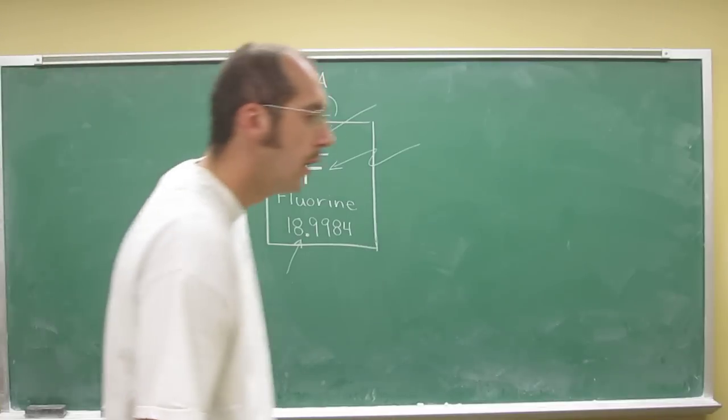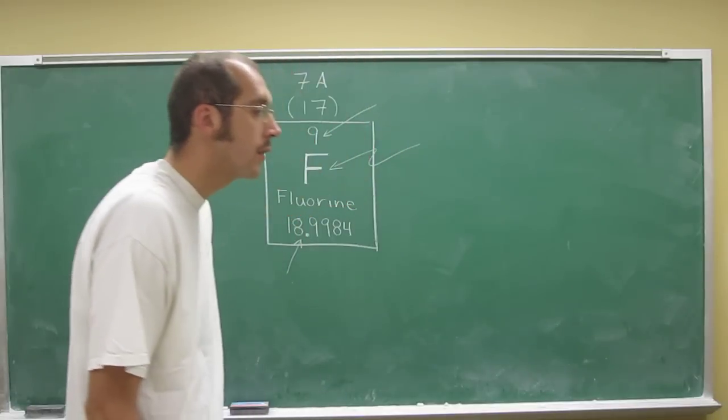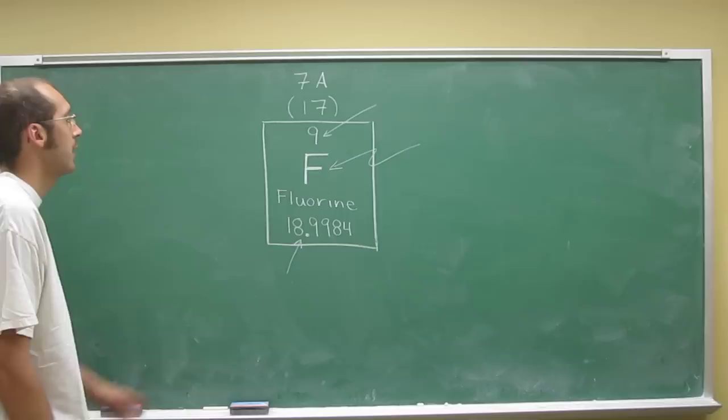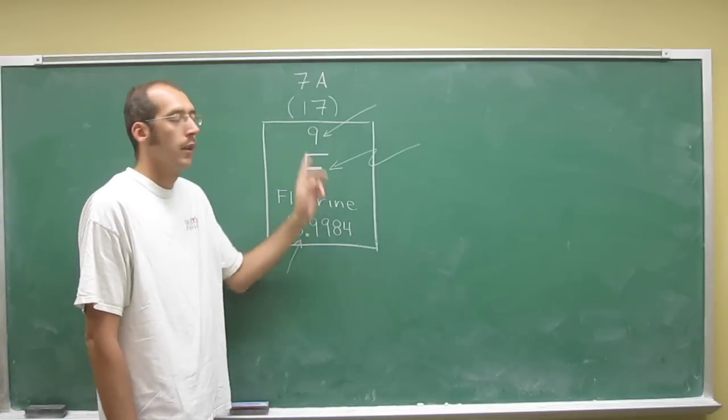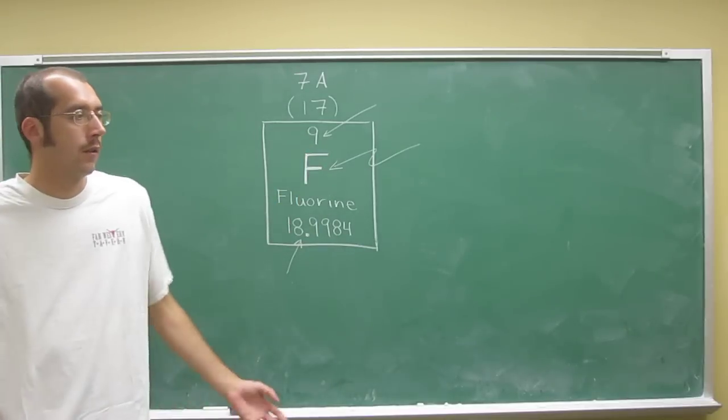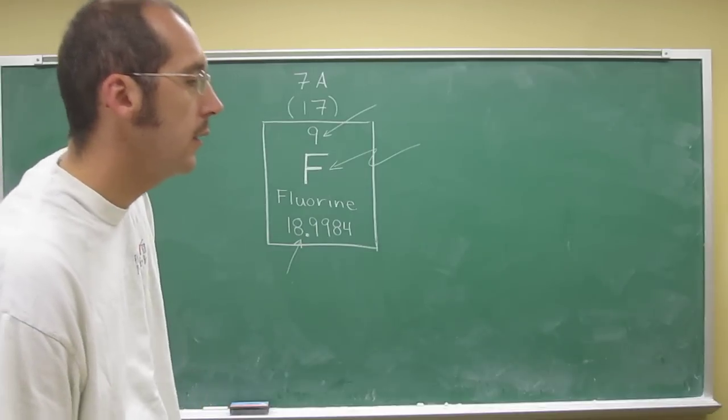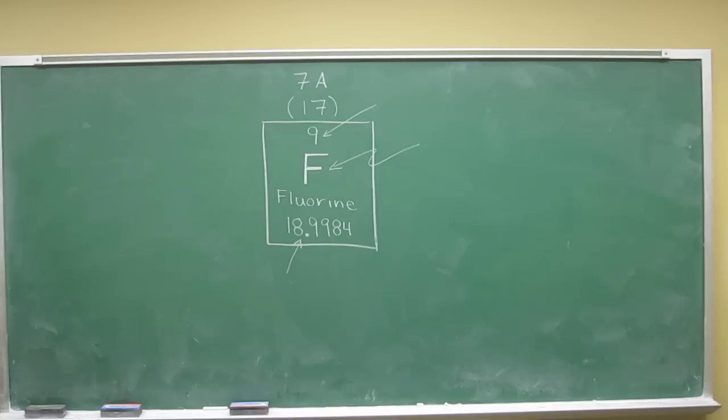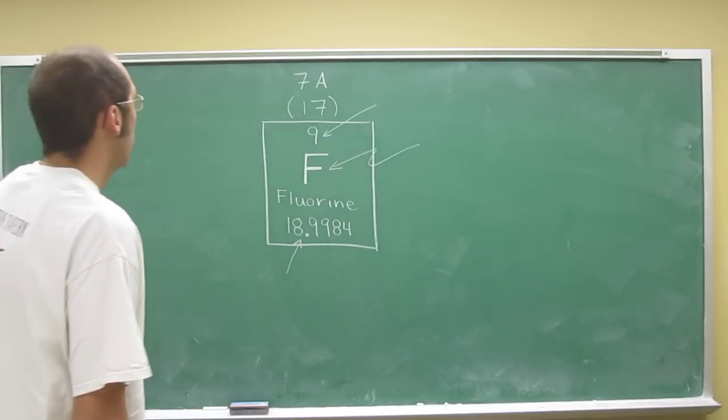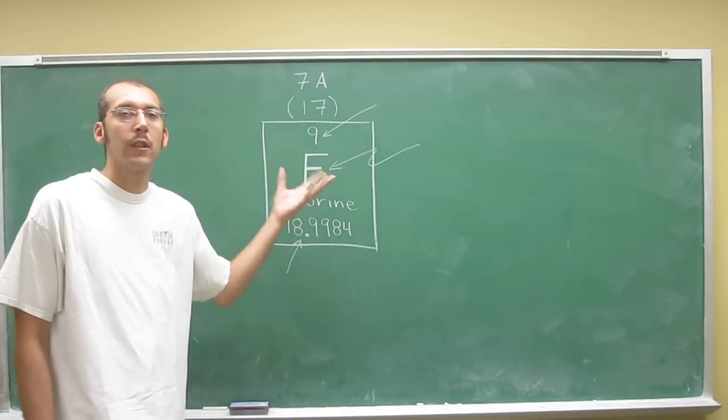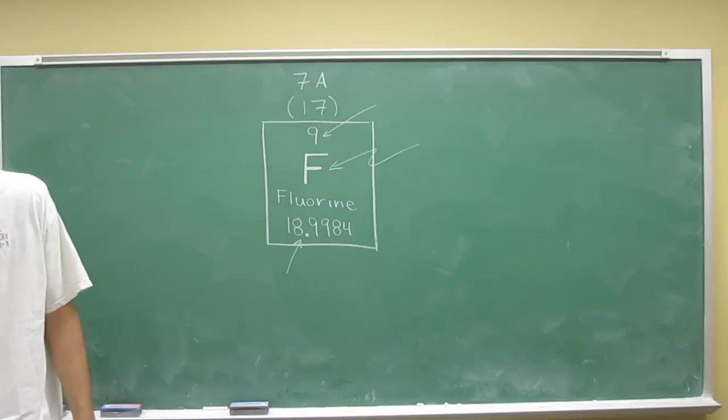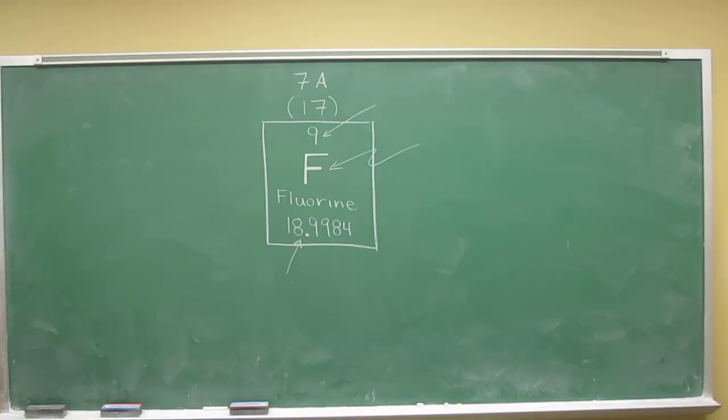So how many protons does fluorine contain? Like I said, it's the same number as the atomic number, so the atomic number tells you the number of protons it contains—nine. How many electrons does fluorine contain? Well, the neutral atom will contain as many protons as it does electrons, so that's nine as well.